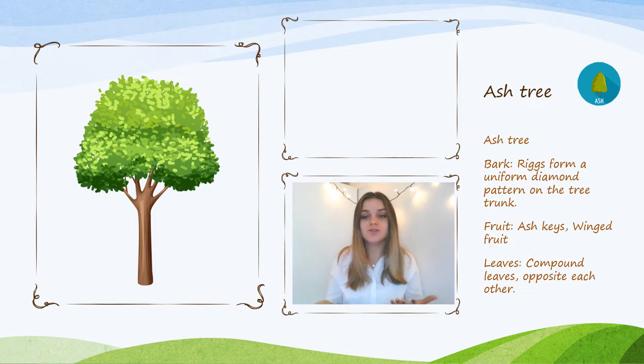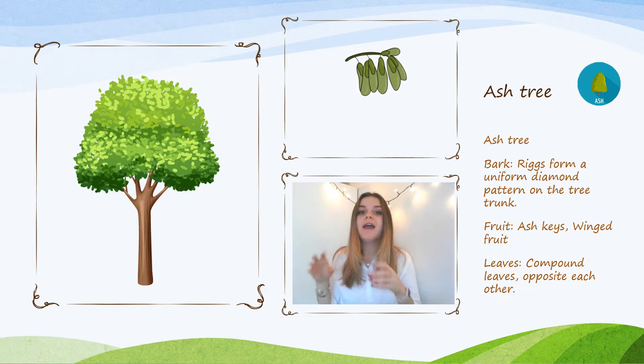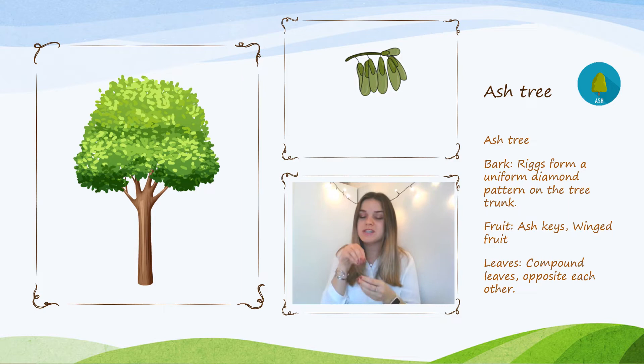It looks very unnatural in a way, although it's just one of the many wonders of nature. The fruit is ash keys. These look a little bit like leaves, but they are actually green pods which contain the seed of the tree, and their shape allows them to travel in the wind and disperse to help grow trees in other places. They're called ash keys because they grow in bunches — there are a lot of them growing next to each other and it looks like a bunch of keys.